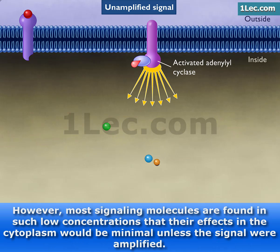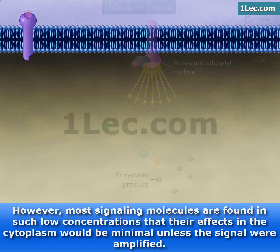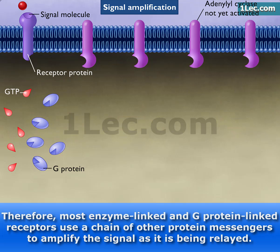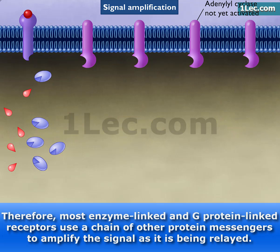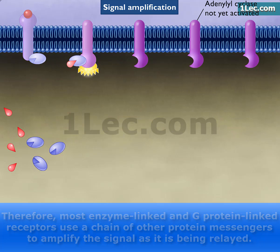However, most signaling molecules are found in such low concentrations that their effects in the cytoplasm would be minimal unless the signal were amplified. Therefore, most enzyme-linked and G-protein-linked receptors use a chain of other protein messengers to amplify the signal as it is being relayed.